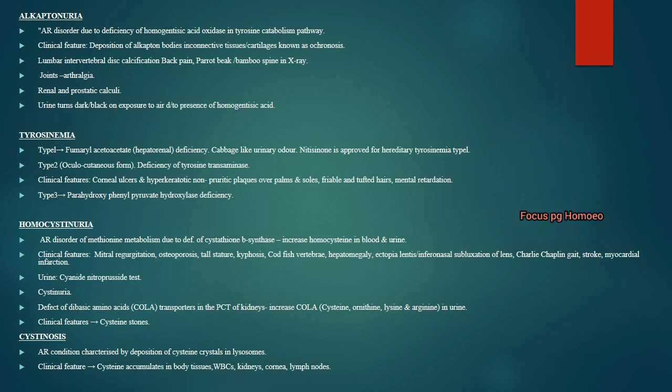Homocystinuria is an autosomal recessive disorder of methionine metabolism due to defect of cystathionine beta-synthase. There is increased homocysteine in blood and urine. The patient presents with mitral regurgitation, osteoporosis, tall stature, kyphosis, codfish vertebrae, hepatomegaly, ectopia lentis, subluxation of the lens, Charlie Chaplin gait, stroke and myocardial infarction. Urine test is positive with cyanide-nitroprusside test.